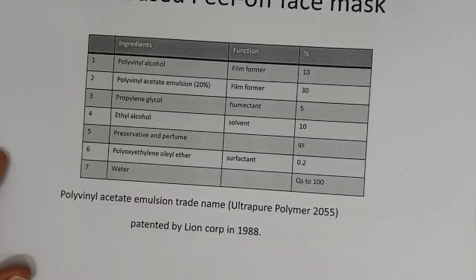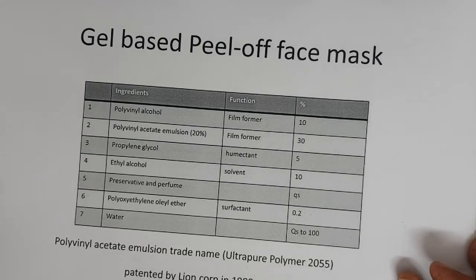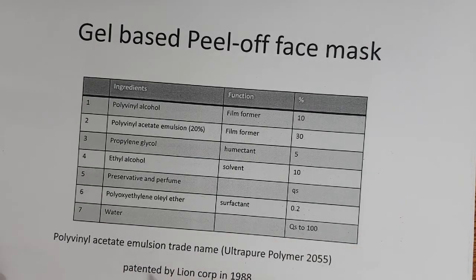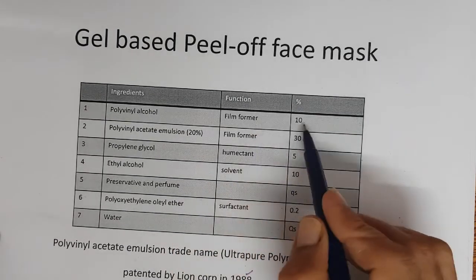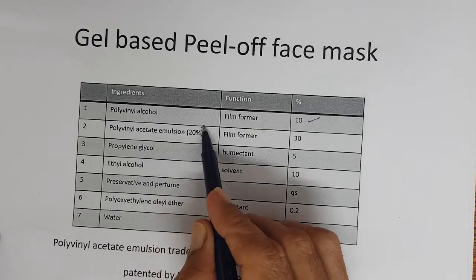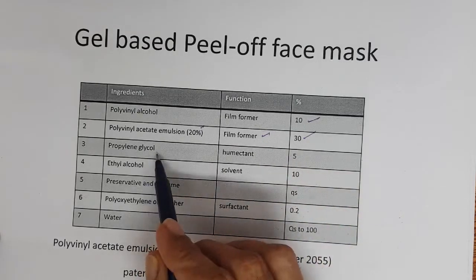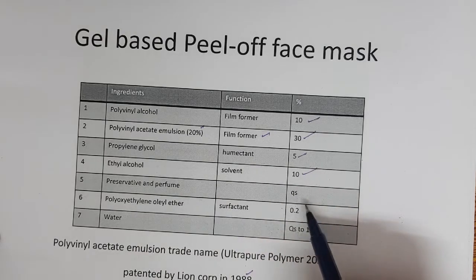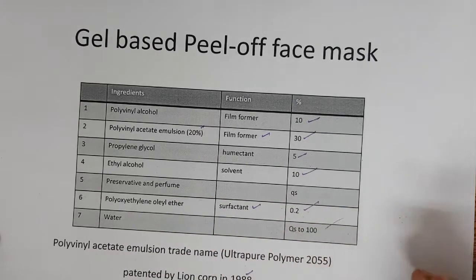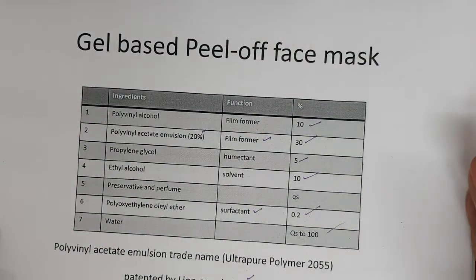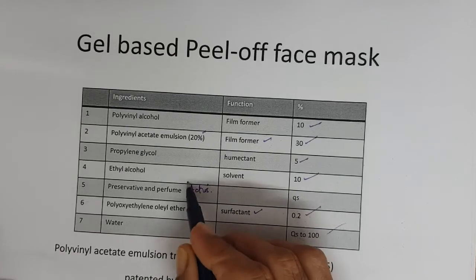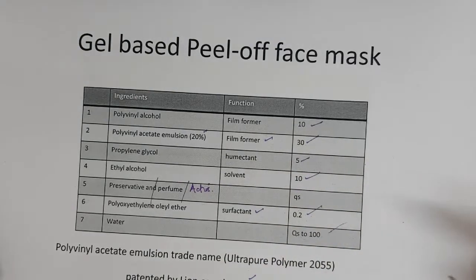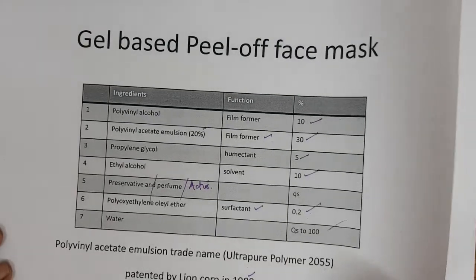An example of a gel-based face mask formulation — patented by Lion Corporation in 1988 and used very widely: polyvinyl alcohol 10%, polyvinyl acetate emulsion (20% emulsion) as film former at 30%, propylene glycol 5%, ethyl alcohol 10%, polyoxyethylene oleyl ether surfactant as a solubilizer, water, preservative, and perfume. You can add actives into this base — whatever actives you want. This is a typical gel-based peel-off mask.